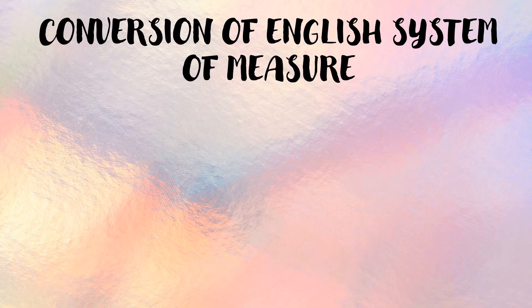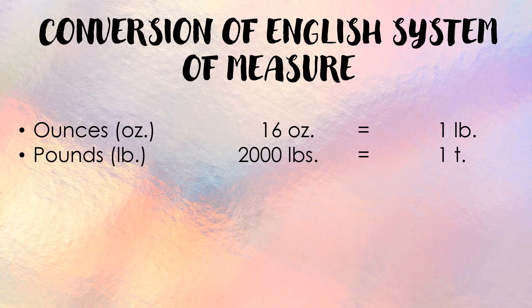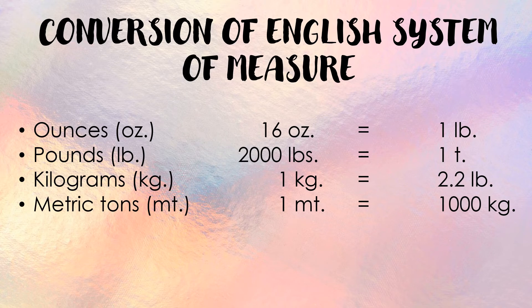Now let us proceed to the English system of measure. Here are the conversion formulas: 16 ounces (oz) is equal to 1 pound (lb); 2,000 pounds is equal to 1 ton; 1 kilogram is equivalent to 2.2 pounds; and 1 metric ton (MT) is equal to 1,000 kilograms.